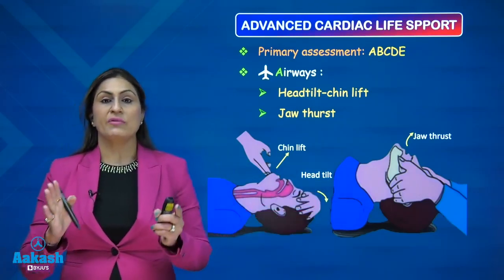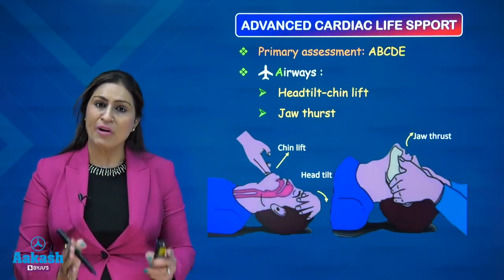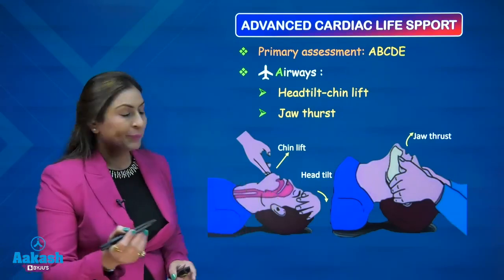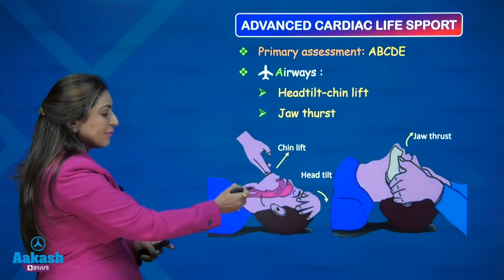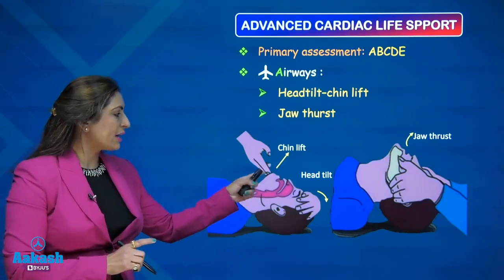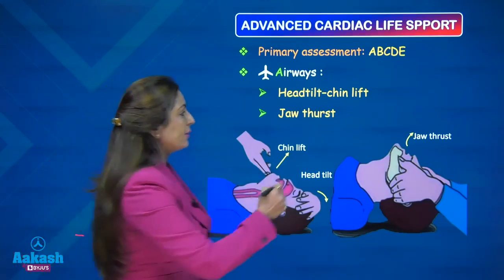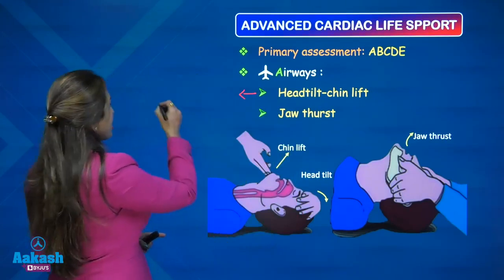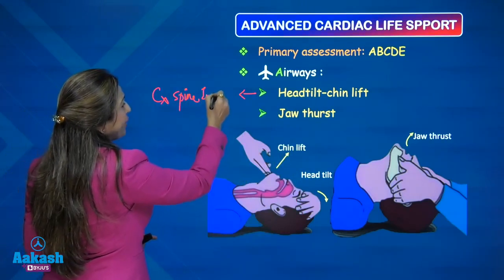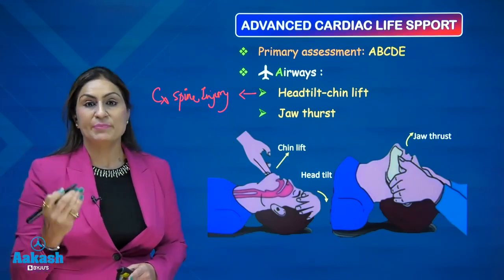When we have a victim in cardiac arrest, this patient has hypotonia. Because of hypotonia, the tongue falls back and obstructs the airway. When the tongue obstructs the airway, the victim cannot breathe. We have to open the airway using the head tilt and chin lift manoeuvre. However, this manoeuvre is contraindicated in patients with cervical spine injury, because performing it can aggravate the cervical spine injury.